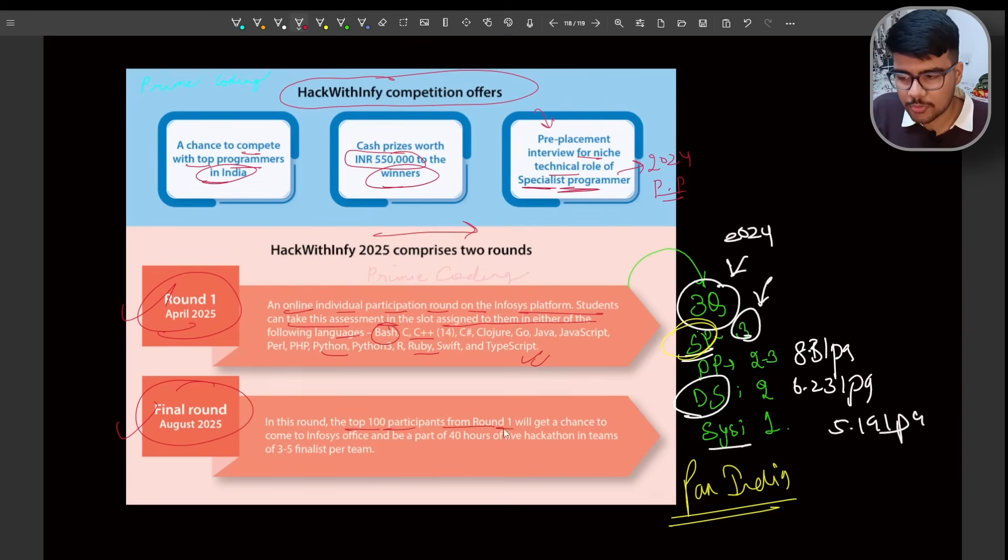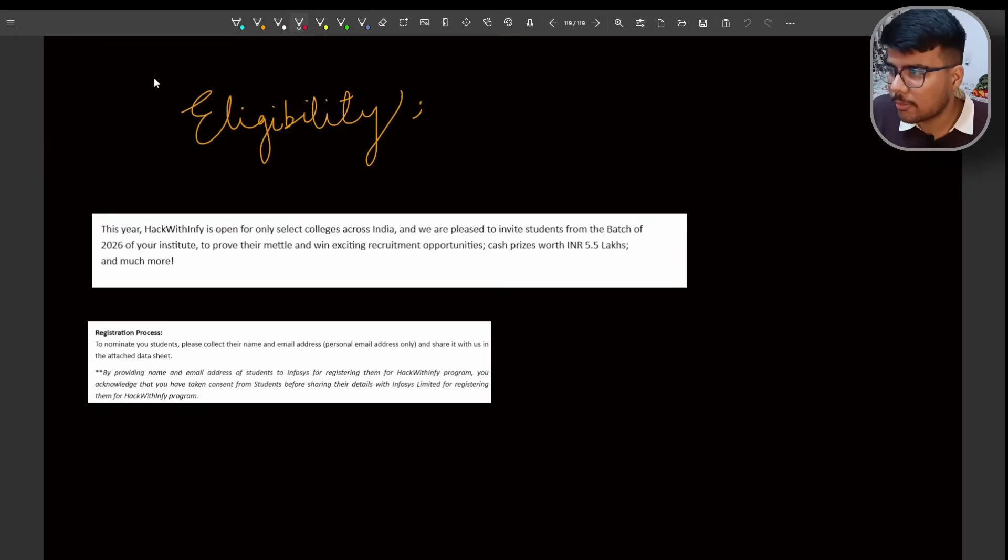Now let's talk about the round two. In the round two, the top 100 participants from round one will get a chance to come to Infosys office, be a part of 40 hours of live hackathon in teams of three to five finalists per team. The people who will win the hackathon will get the pre-placement interviews. On top of it, the winning prize worth of rupees 5.5 lakh. Now let's talk about the eligibility criteria. The Hack with Infy is open for select college across India, which means it is from typically premium colleges, might be, but tier three colleges are also eligible. We are pleased to invite students from the batch of 26 of your institute to provide their mettle and with exciting recruitment opportunities.